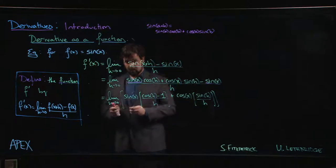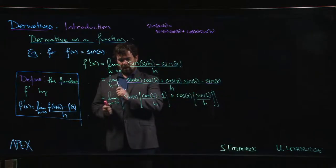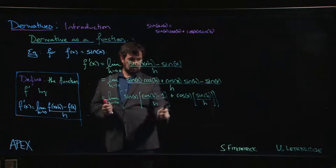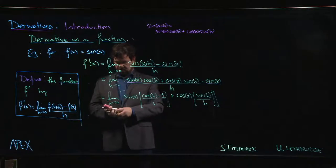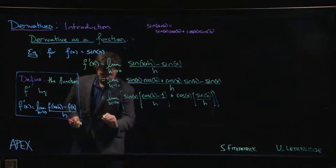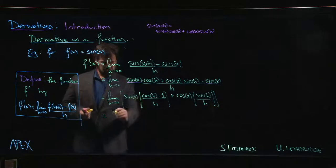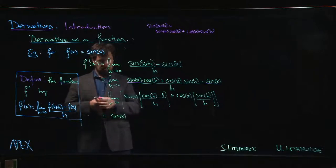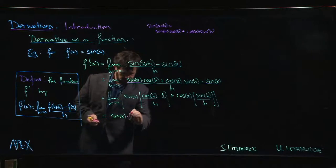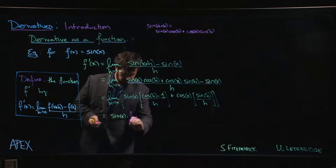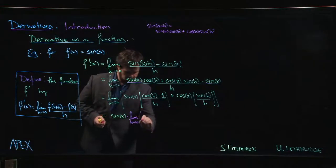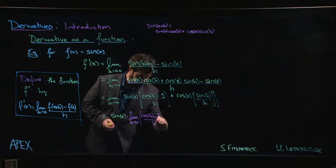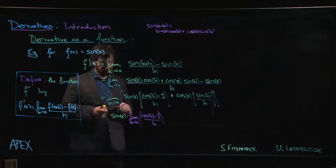All right, now remember your limit properties. The limit is with respect to h. So this is a constant as far as the limit's concerned. So is this. Here are the two limits. What we have is sine x times a limit, h going to 0, cos h minus 1 over h.